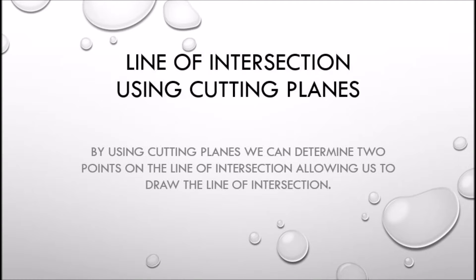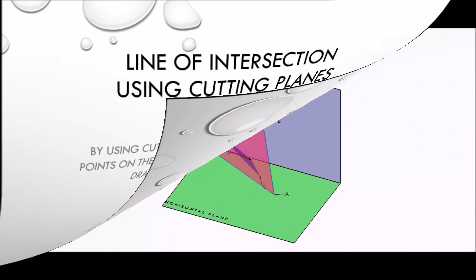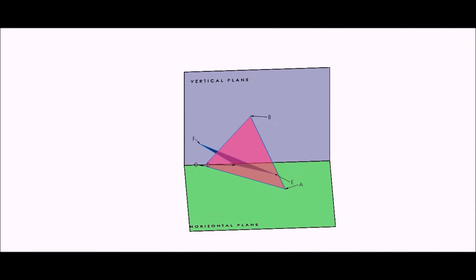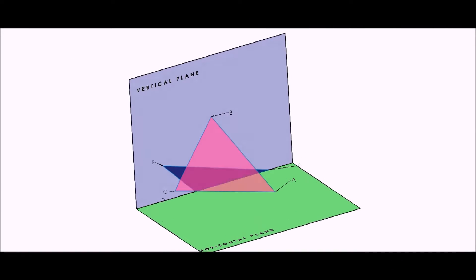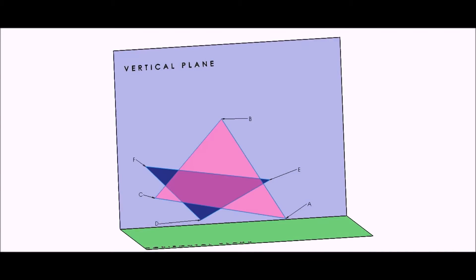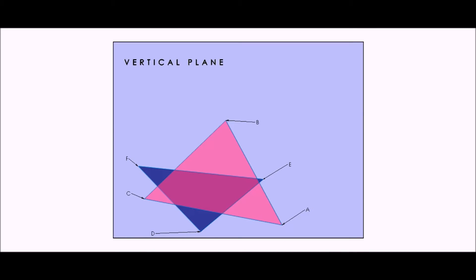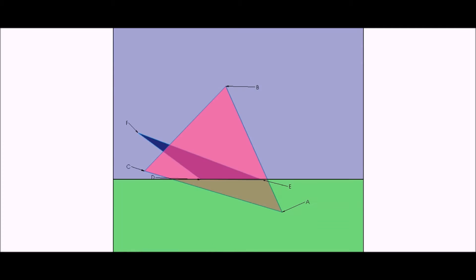By using cutting planes we can determine points on the line of intersection, allowing us to draw the line of intersection in plan and then in elevation. Here we see a SOLIDWORKS model of how the lamina will look when set up.